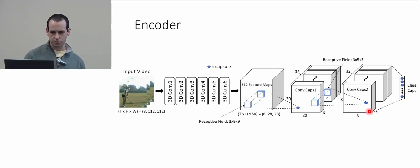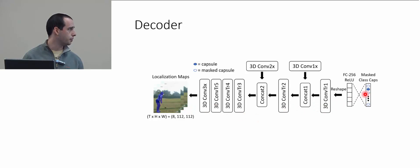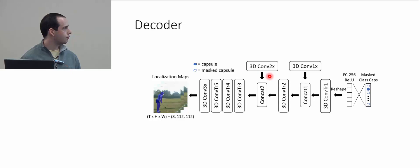We use coordinate addition so that positional information is not lost in the final fully connected layer. In the decoder network, we get the class capsule and mask out the class of interest — at training time, the ground truth class, for example golfing. We pass this through a fully connected layer to get 256 features, reshape it, and apply a series of transpose convolutions to get the output localization. Skip connections from the previous capsule layers ensure spatial-temporal information is maintained, giving us the final localization.